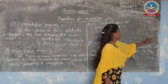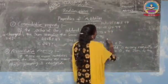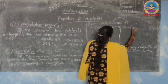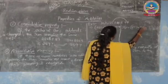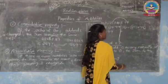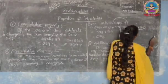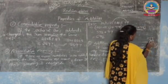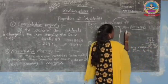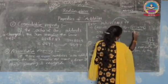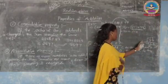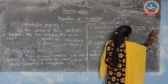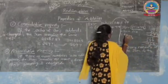Now let us change the grouping — grouping the last two numbers: 340 plus (253 plus 99). First we add 253 plus 99: 9 plus 3 is 12, carry 1; 9 plus 5 plus 1 is 15, carry 1; and 2 plus 1 is 3. So 253 plus 99 equals 352. Now 340 plus 352: 2 plus 0 is 2, 5 plus 4 is 9, 3 plus 3 is 6. We get 692.